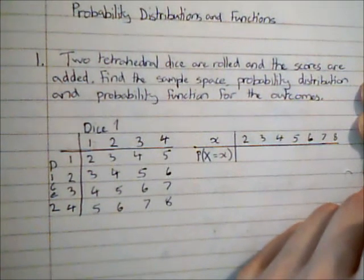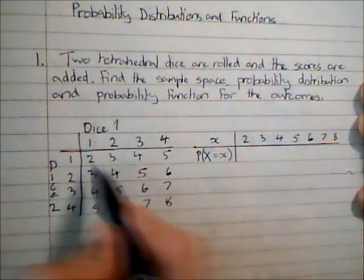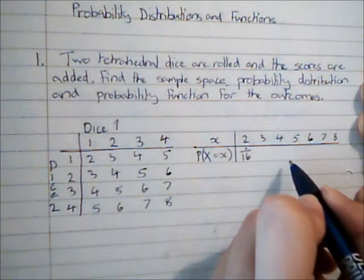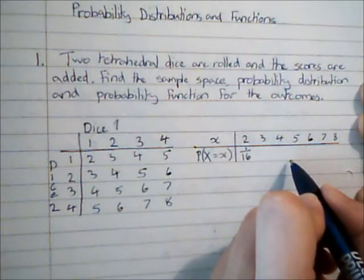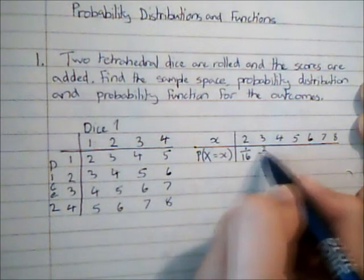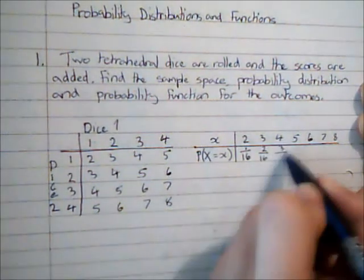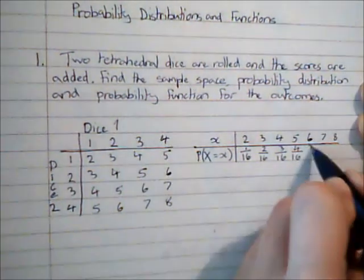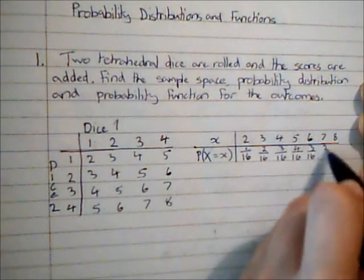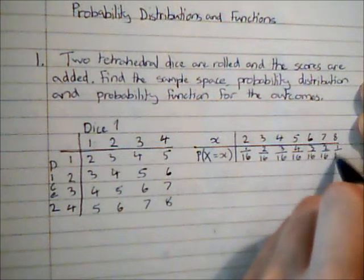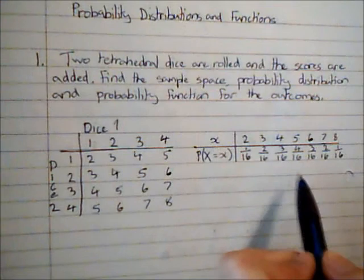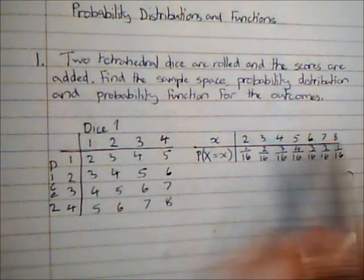So what is the probability of getting each of these? Well, there is 1 two out of 16 outcomes, there are 2 threes, there are 3 fours, there are 4 fives, there are 3 sixes, there are 2 sevens, and there is 1 eight. So this then is the probability distribution as it tells me what is the probability of each of these different outcomes happening.